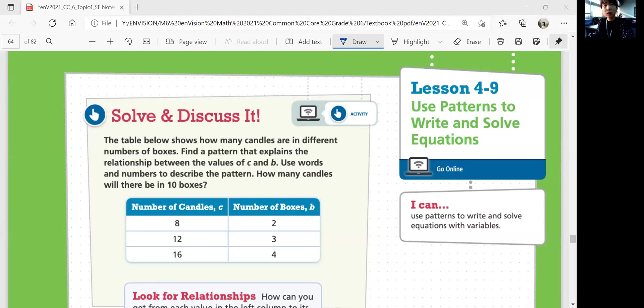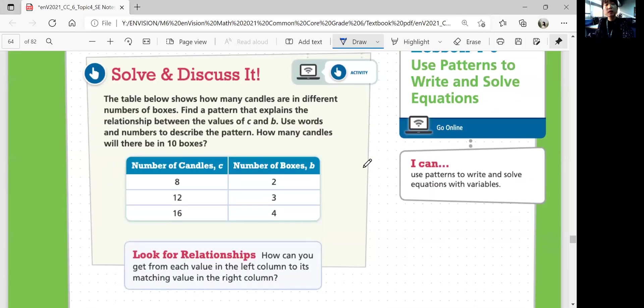Let's look at Solve and Discuss It. The table below shows how many candles are in different numbers of boxes. Find the pattern that explains the relationship between the values of C and B. Use words and numbers to describe the pattern. How many candles will there be in 10 boxes?